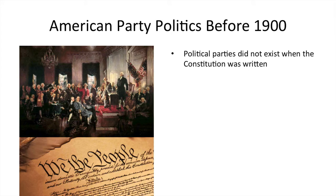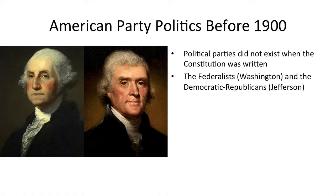American party politics before 1900 — a very short, simplistic primer. Political parties did not exist when the Constitution was written; they came later. However, George Washington, Thomas Jefferson, John Adams — the first presidents — still identified with political positions reminiscent of a party. Federalists like George Washington, and more so his vice president John Adams, were one faction. The other was the Democratic-Republicans, a strange name given the parties we know today, represented by Thomas Jefferson. The Federalists favored the federal government; the Democratic-Republicans favored states' rights.